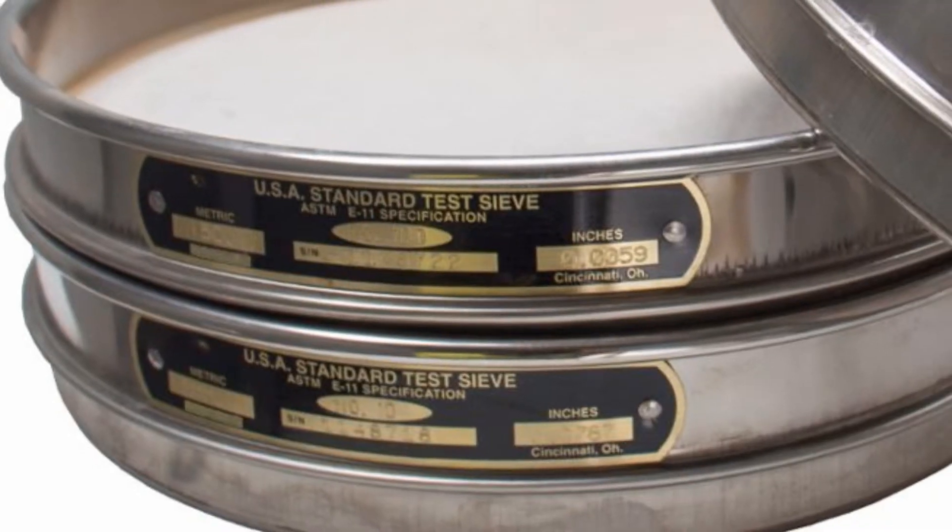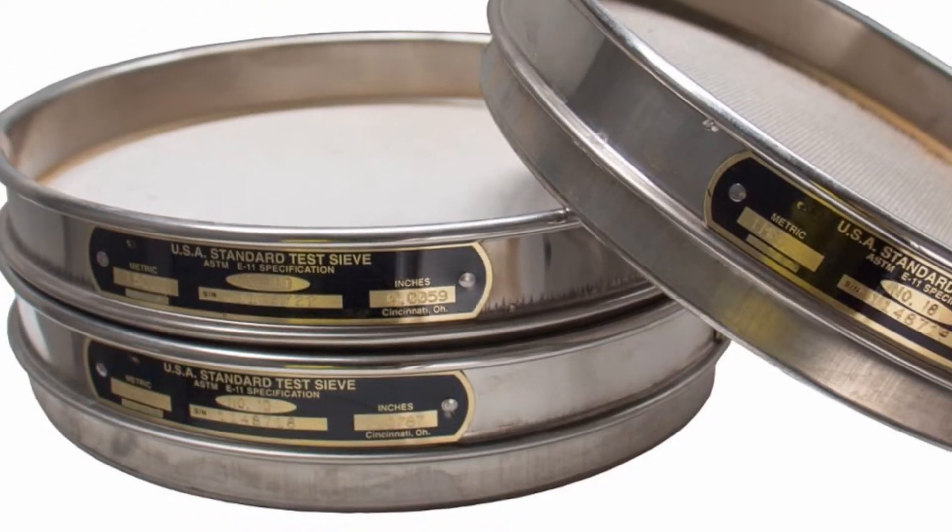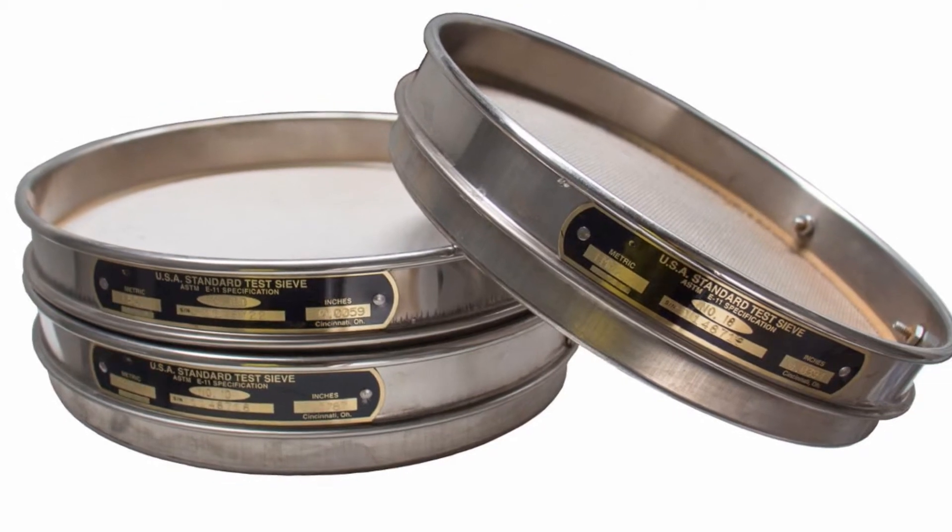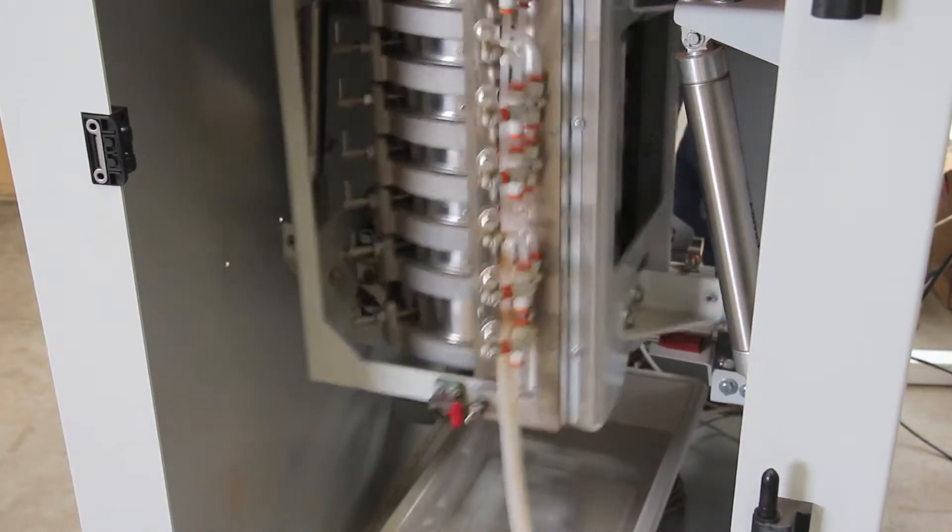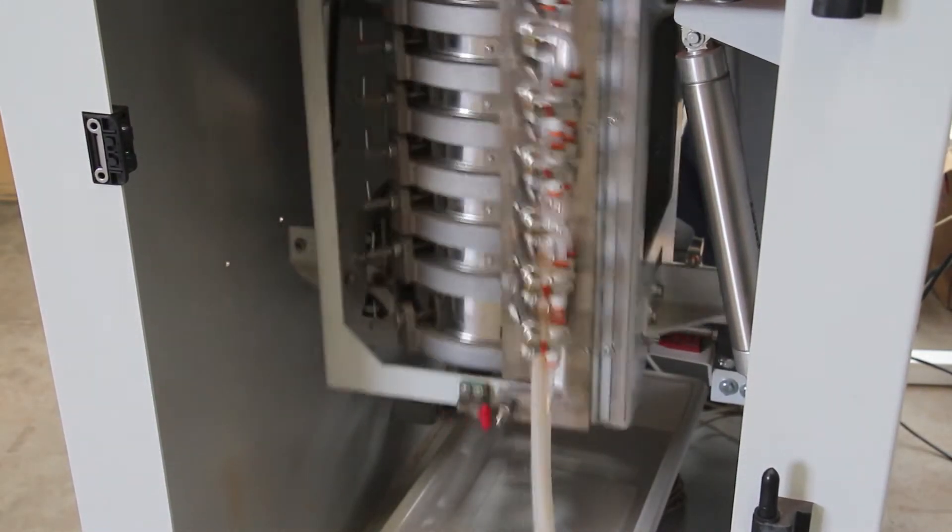The Sievemaster uses standard or half-height 200mm circular test sieves which can be easily inserted and changed to suit specific test requirements. It shakes and taps for a preset amount of time using the same stroke and frequency as typical manual shakers.